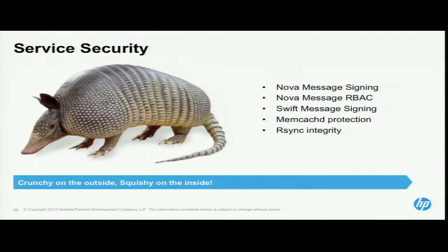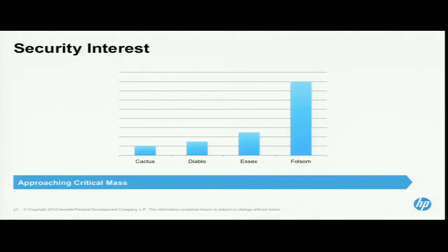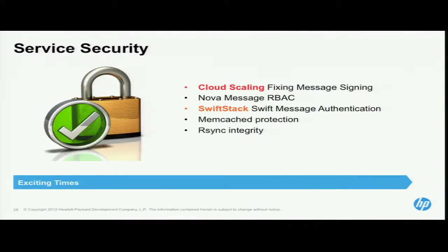A few things I want to call out that we've been working on: security has improved noticeably. I now go into a design summit room and I don't have to raise my hand to say there's no security here, because people are already talking about it. This room is full — it wouldn't have been a year ago. Cloud Scaling have been fixing the message signing. Eric's doing a talk right after this one — he's going to highlight exactly how bad some of that stuff is and what he's done to fix it. It needs a bit more development to be production ready, but it's good.